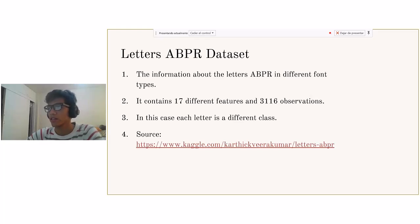It contains 17 different features for each letter and there are 316 observations. Each letter will be considered as a different class.